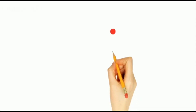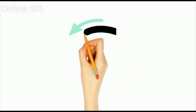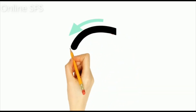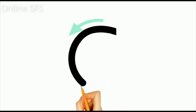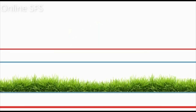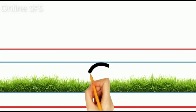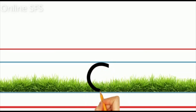Let's learn how to write K. We start from the red dot and turn towards our left and make a curly caterpillar. K. Let's write in four lines. This is how we write K.